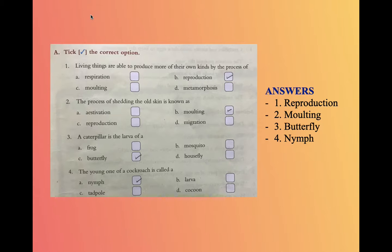Coming to the second question: The process of shedding the old skin is known as? The answer is B: molting. Coming to the third question: A caterpillar is the larva of? The answer is C: butterfly.